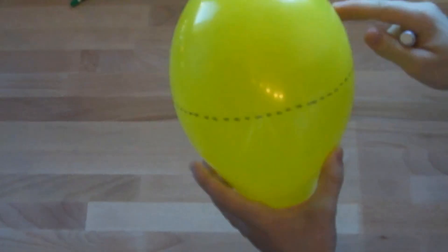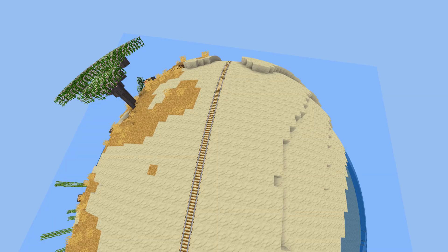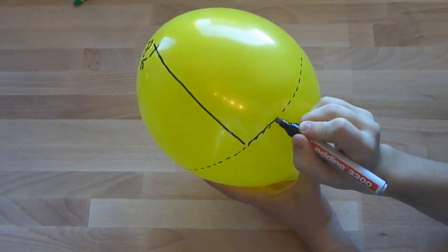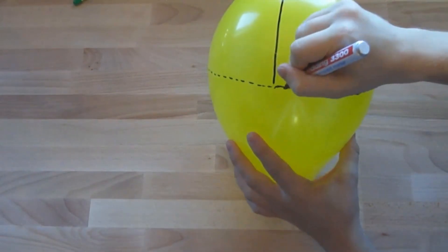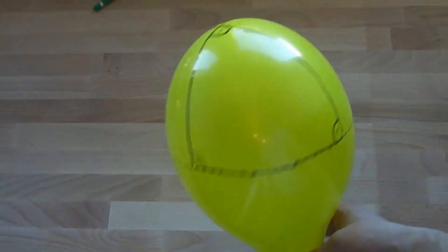Imagine this balloon was the planet. Now imagine building a straight railway track like this one with only right-angle turns. On a planet, you could then build a triangle.